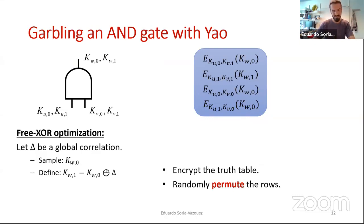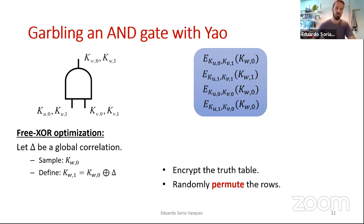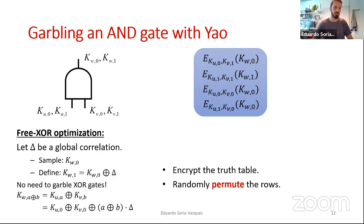What do you do if you want to use the free XOR optimization? Instead of sampling two different keys per wire, you sample a global correlation delta. Then for every wire in your circuit you sample a single key — arbitrarily call this the key for value zero. All of your keys for the opposite value, value one, you define as this key for value zero XOR-ed with your global correlation. We want this correlation because now we can garble XOR gates for free — we don't need any ciphertext.